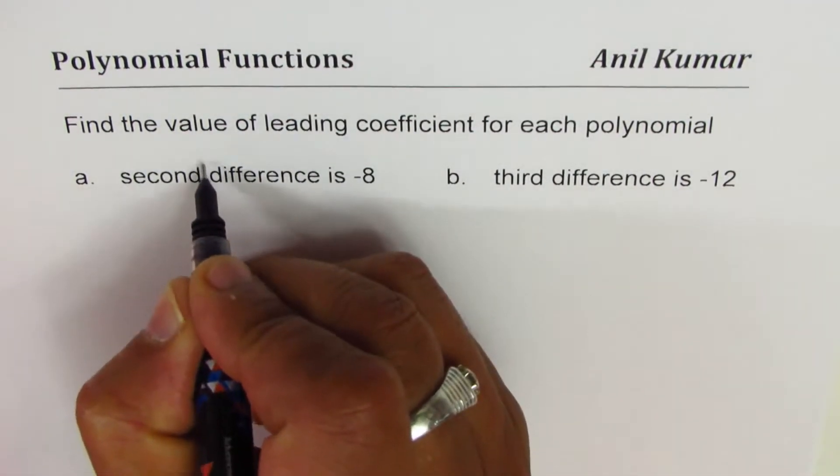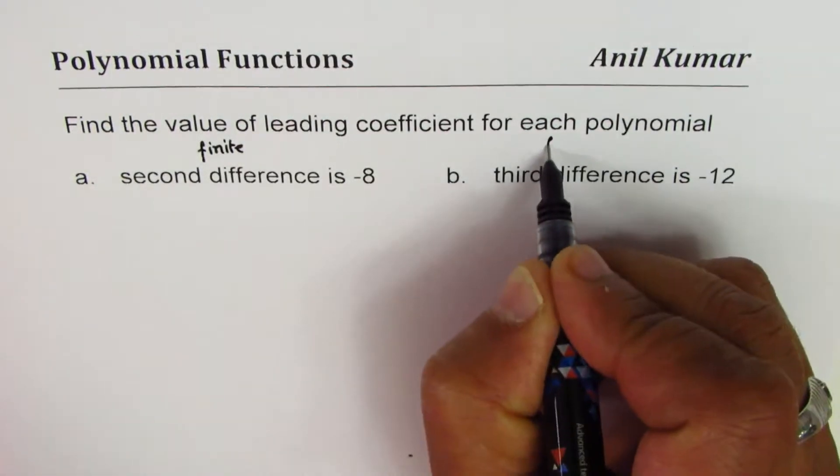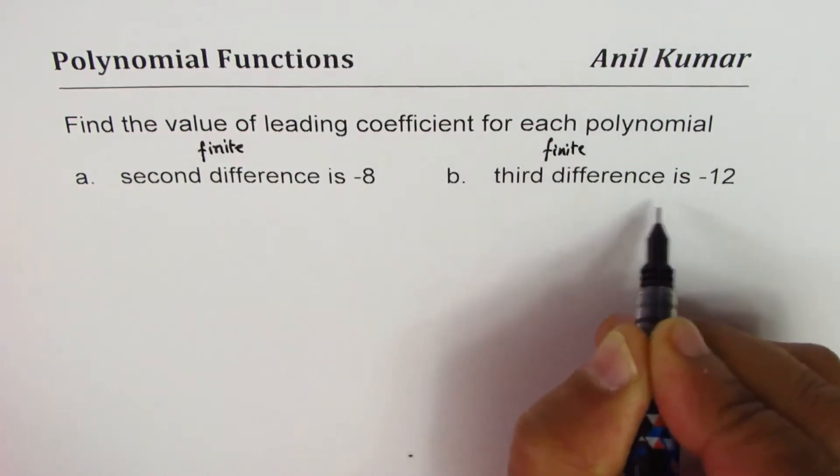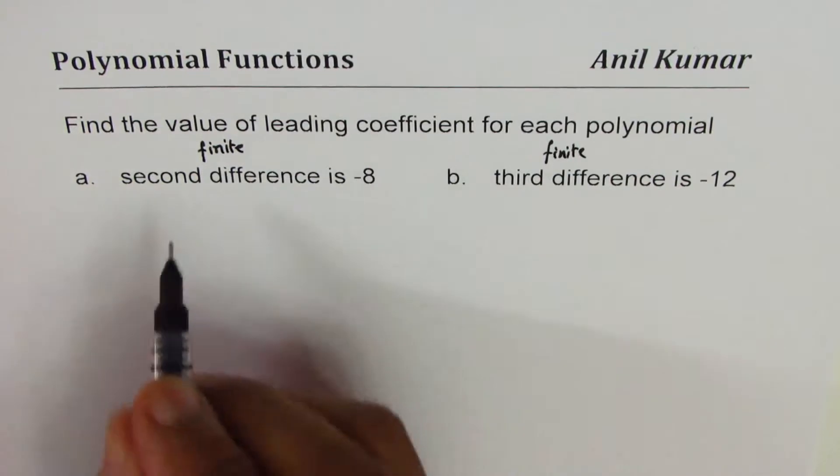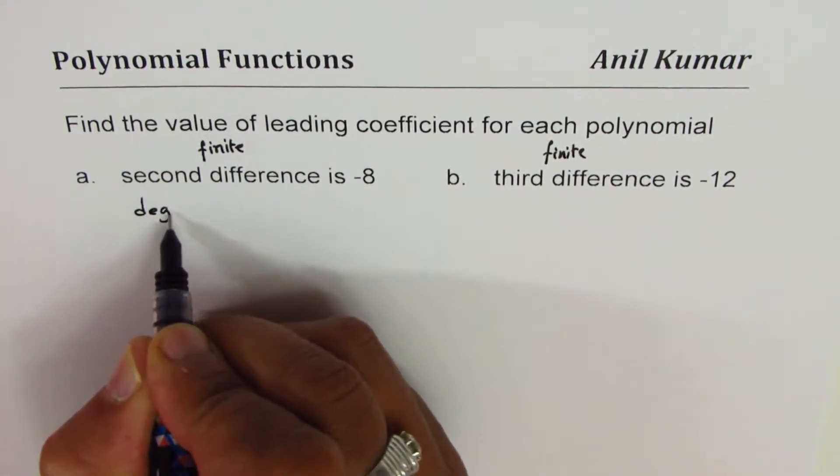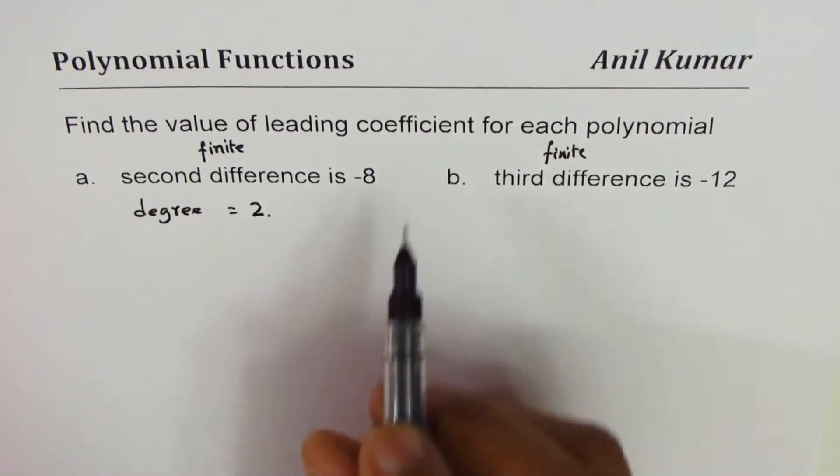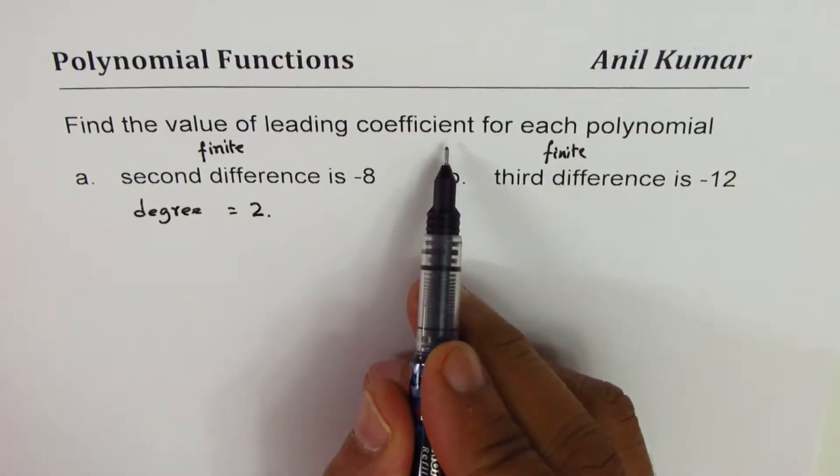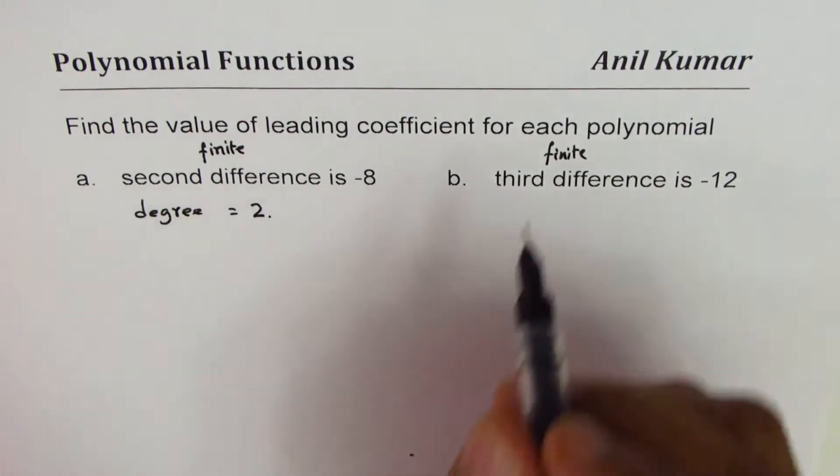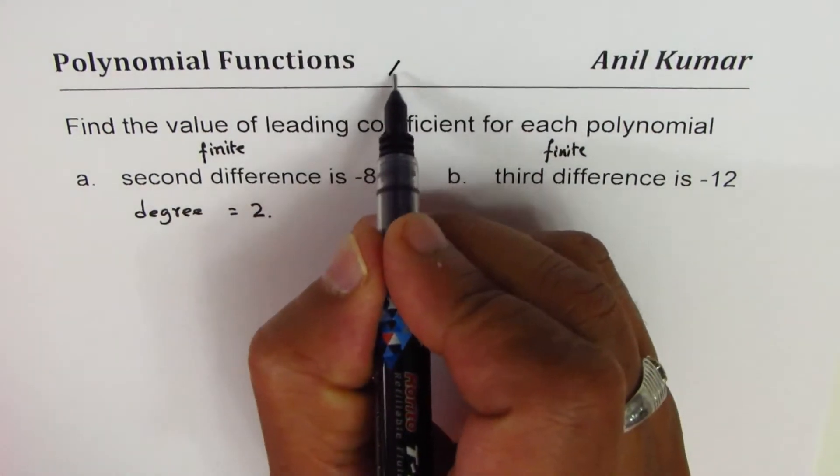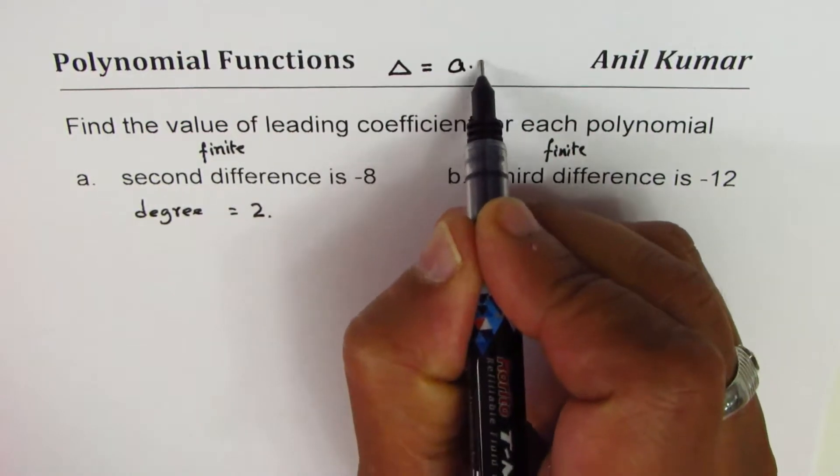I should write second finite difference or third finite difference is -12. Now if second difference is -8, we have degree of polynomial as 2. The relation between leading coefficient, finite difference, and degree: you know that the relation is you could write finite difference delta equals leading coefficient a times n factorial, where n is the degree.